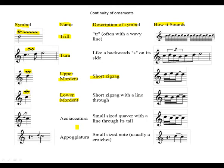Acciaccatura: small-sized quaver with a line through its tail, and this is how you play it. Appoggiatura: small-sized note, usually a crotchet.